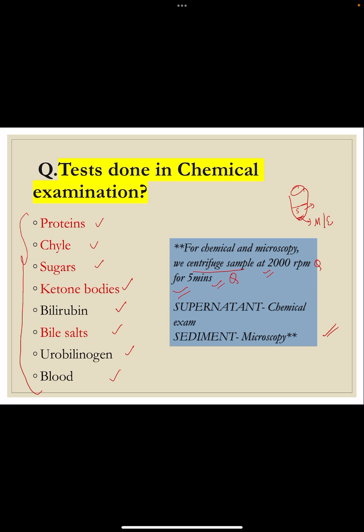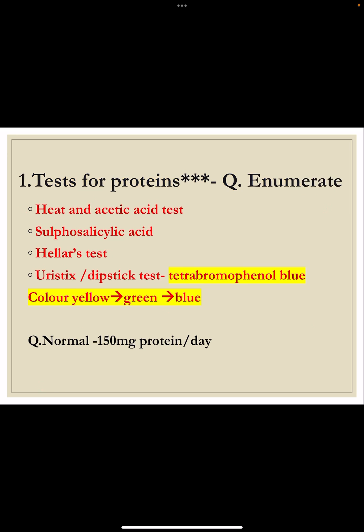Next we come to the tests for proteins. The various tests done to detect proteinuria are: the heat and acetic acid test, which we also perform in the exam; sulfosalicylic acid test; Heller's test; and urine dipsticks. Urine dipsticks are commercially available and impregnated with the chemical tetrabromo phenol blue. When protein interacts with this chemical, the color changes from yellow to green to blue depending on the protein content.